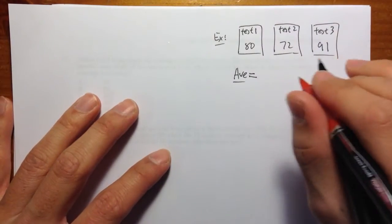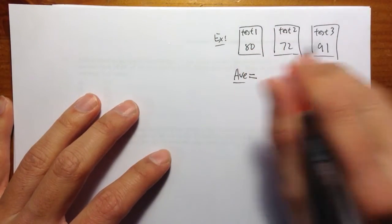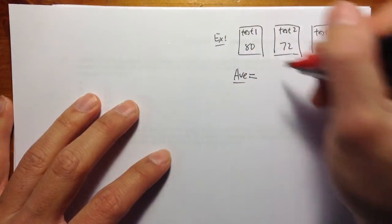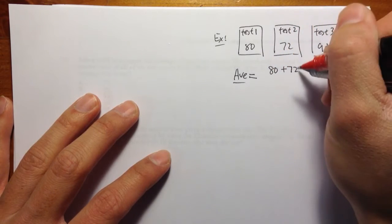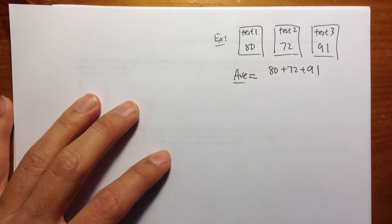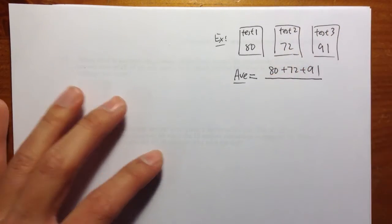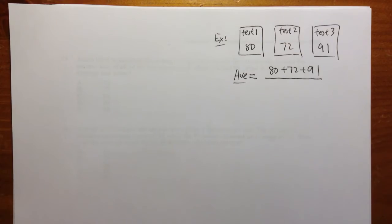Average, what we need to do first is you add up all these scores, add up all these points. So 80 plus 72 plus 91. And then I have to divide by how many exams, how many tests that he took. Divide by three.